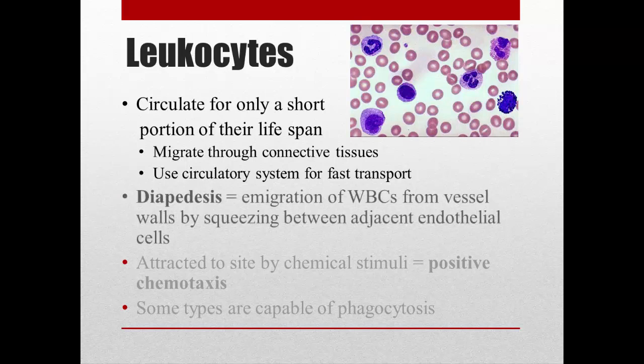In order to get out of the blood, they use a process called diapedesis. This is basically the way a white blood cell squeezes itself between two adjacent blood vessel wall cells. These blood vessel wall cells are called endothelial cells, and the white blood cells have to squeeze their way between those endothelial cells in order to get out of the blood. That's called diapedesis.